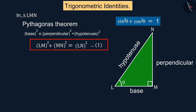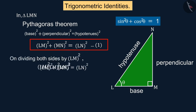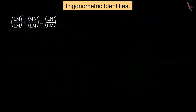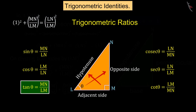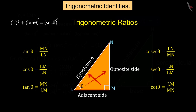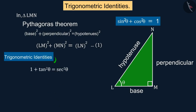The following equations are obtained by dividing the square of LM on both sides of equation 1, where we use the trigonometric ratios: tan θ equals MN upon LM, and sec θ equals LN upon LM, from which we get 1 + tan²θ = sec²θ, which is a trigonometric identity.